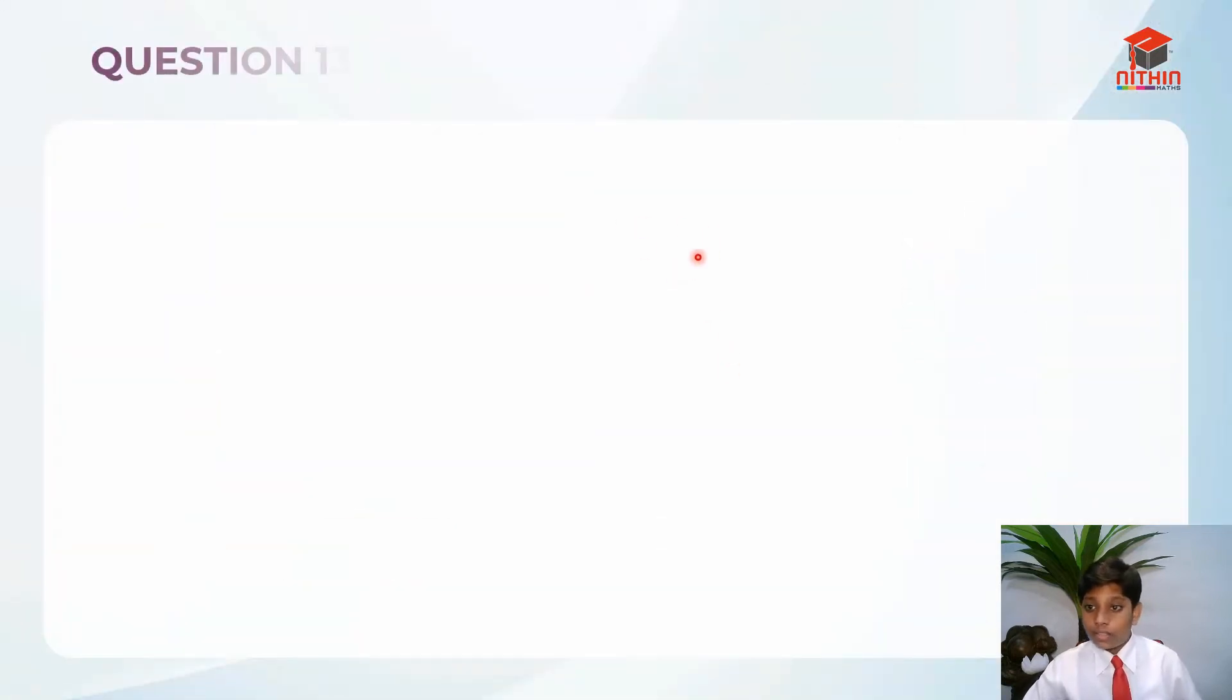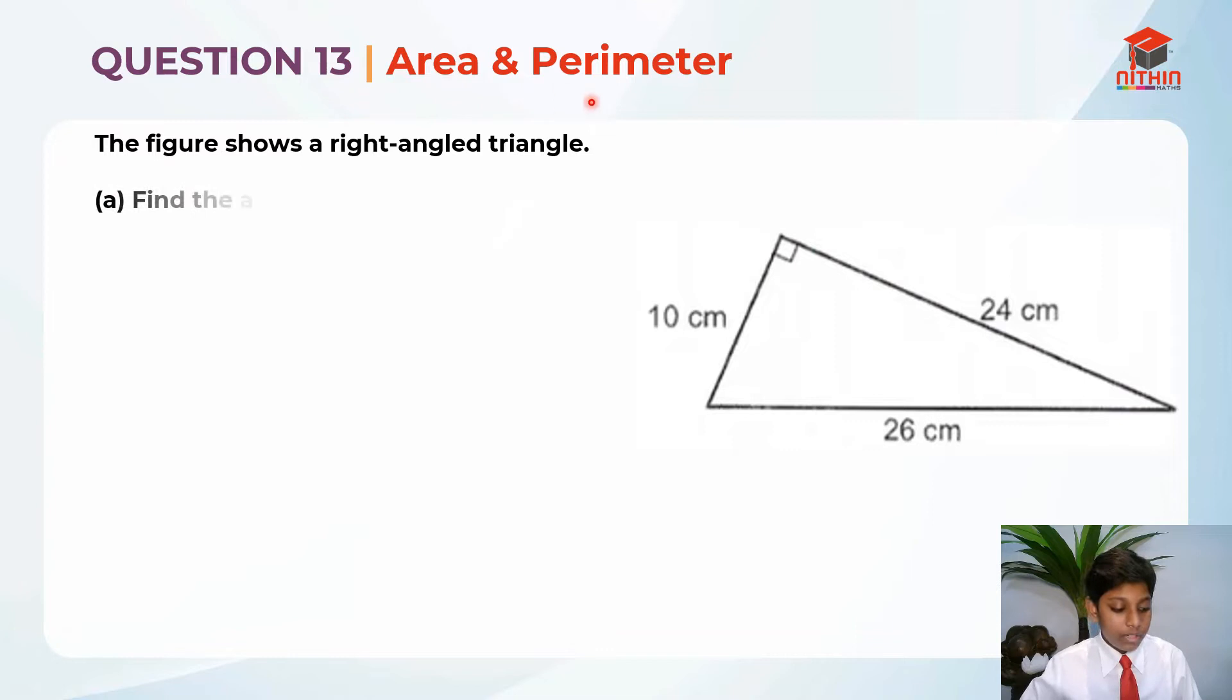Question 13. So this question is testing us on area and perimeter. This question is a rather simple question for part A. This question has two parts, part A and part B. I'll be going through part A right now and next part B.